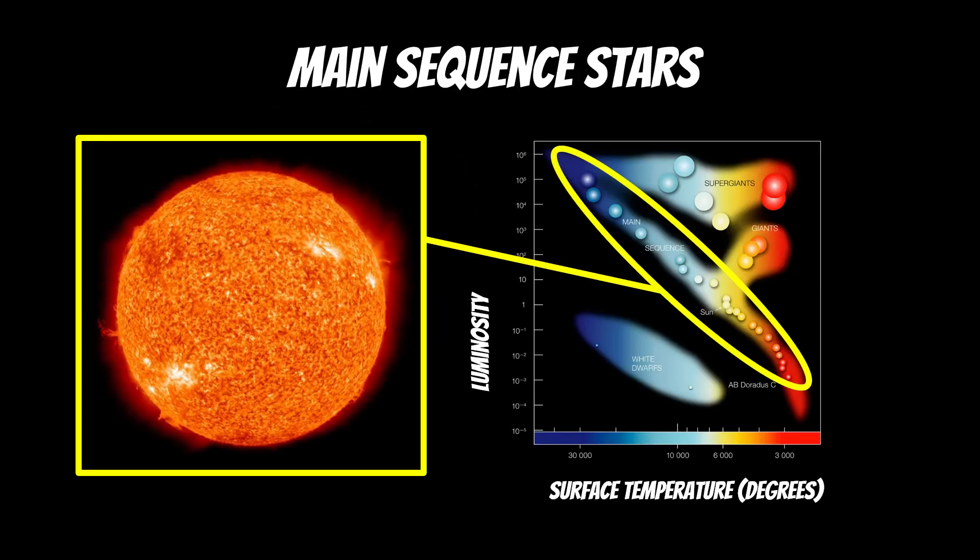So first let's go to the HR diagram. Now if you haven't come across that before, it's a scatter plot of all different sorts of stars and it's plotted against their surface temperature and the luminosity.